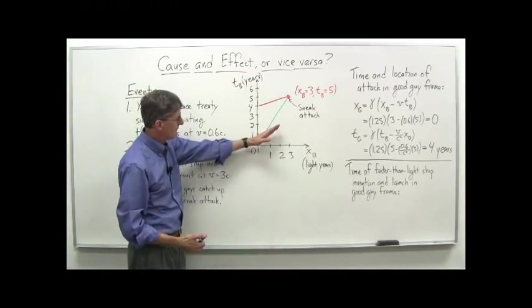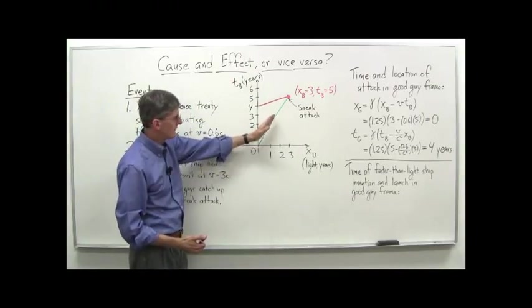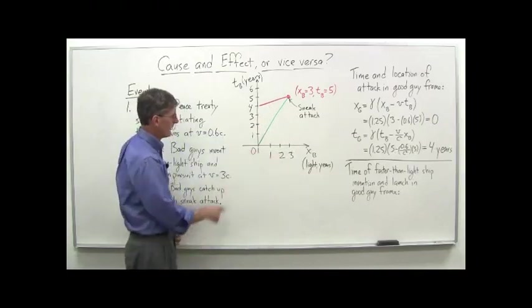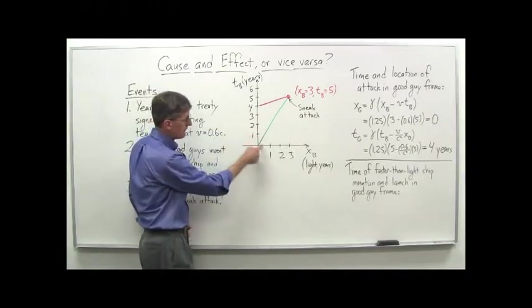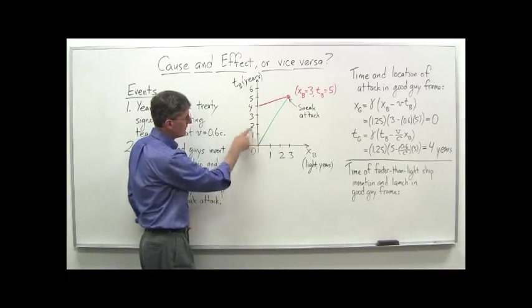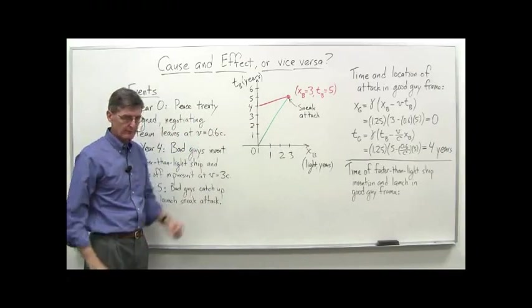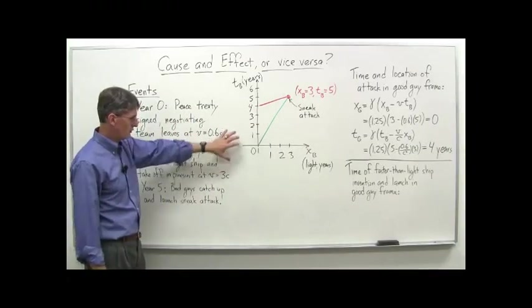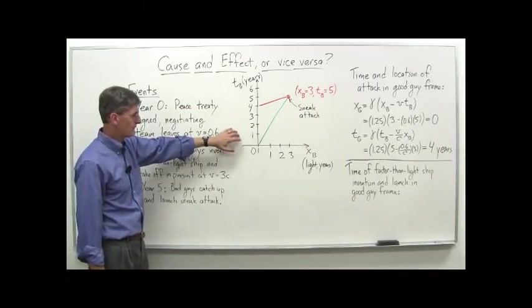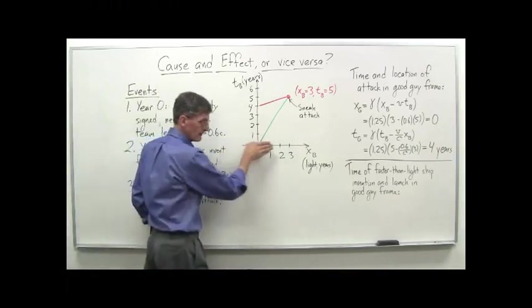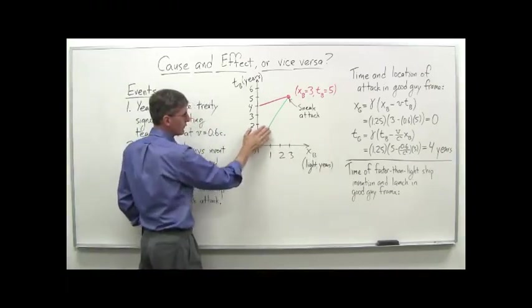And if the speed of light, again, is at a 45-degree angle here, this roughly is 0.6c, as we've drawn it. In other words, in one year, they go about 0.6 of a light year, in two years, they go about 1.2 of a light year, and so on and so forth. Not precise, but pretty close there in terms of the units involved and the scale involved. So they're traveling along here, going back home. This is their world-line at 0.6c.